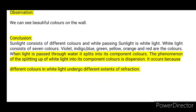Conclusion: White light splits into indigo, blue, green, yellow, orange, and red. We have split white light into 7 colors. This splitting of white light into its component colors is called dispersion.